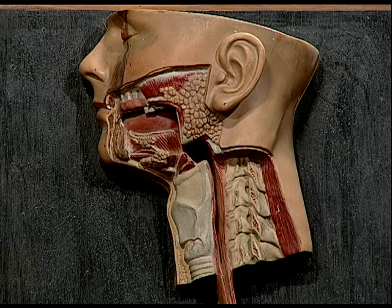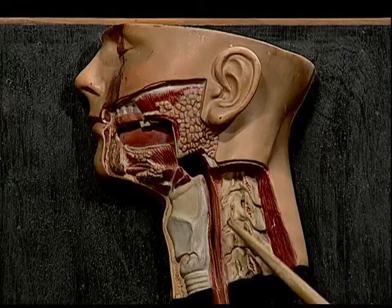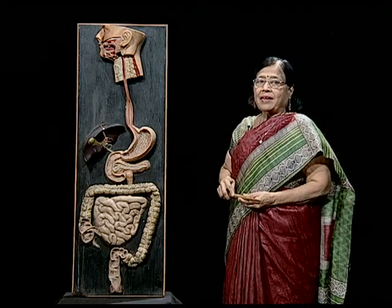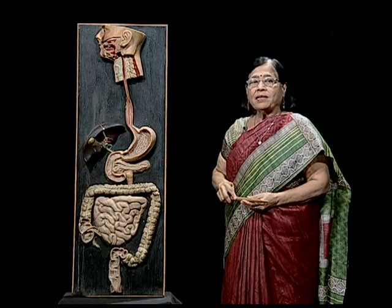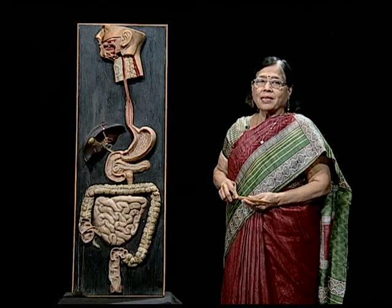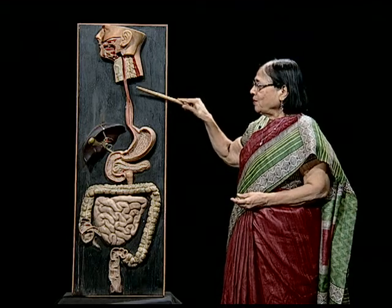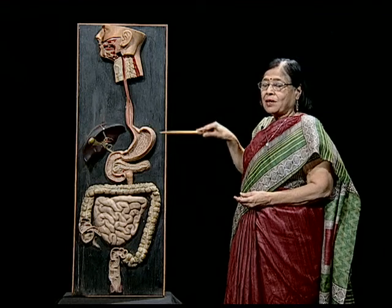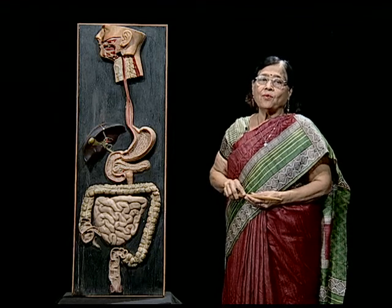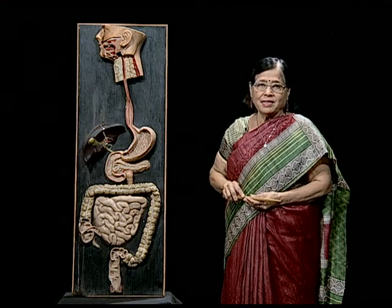From the mouth, food travels through the esophagus — a tube connecting the mouth with the stomach. No digestion takes place in the esophagus; it transports food. There is a movement called peristaltic movement which pushes food at a particular pace from the esophagus to the stomach. Peristalsis goes on in every part of the alimentary canal, moving food in a forward direction at a particular speed.